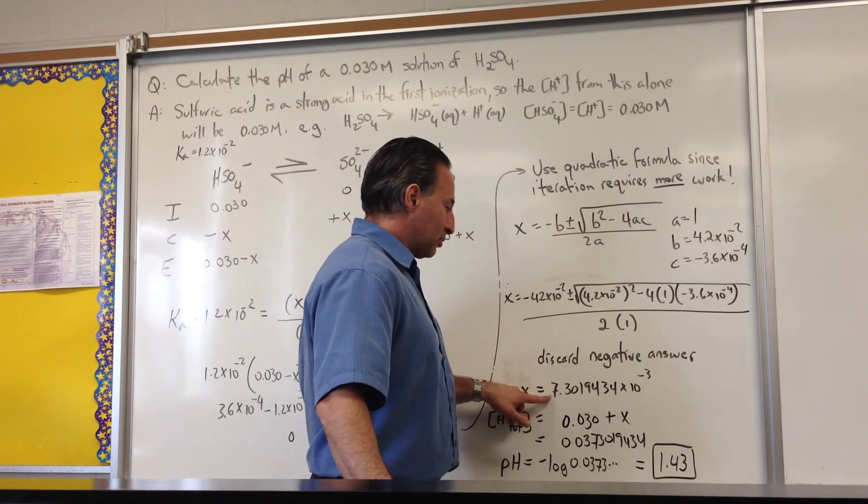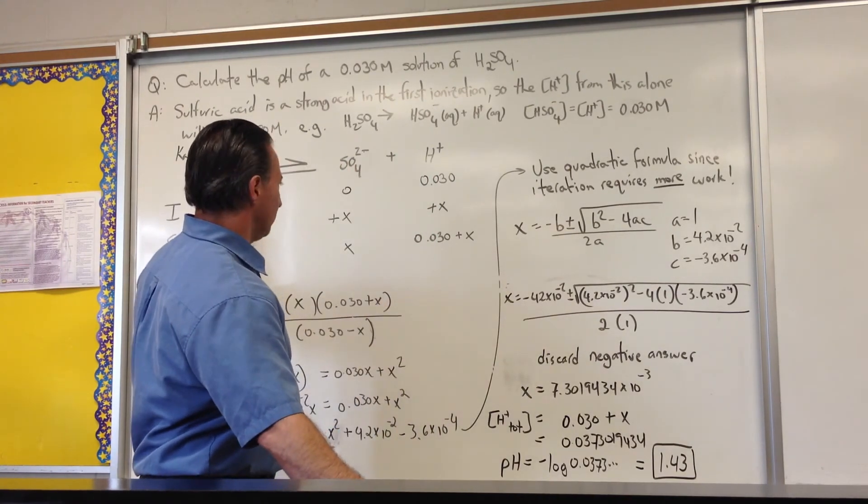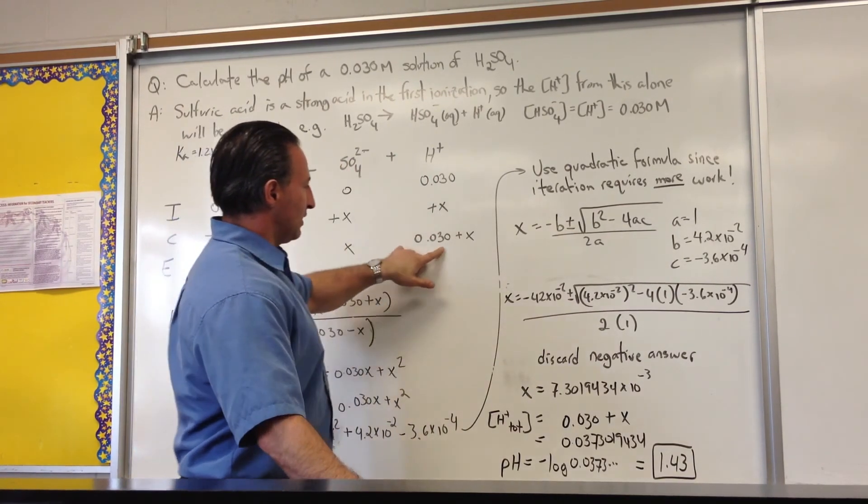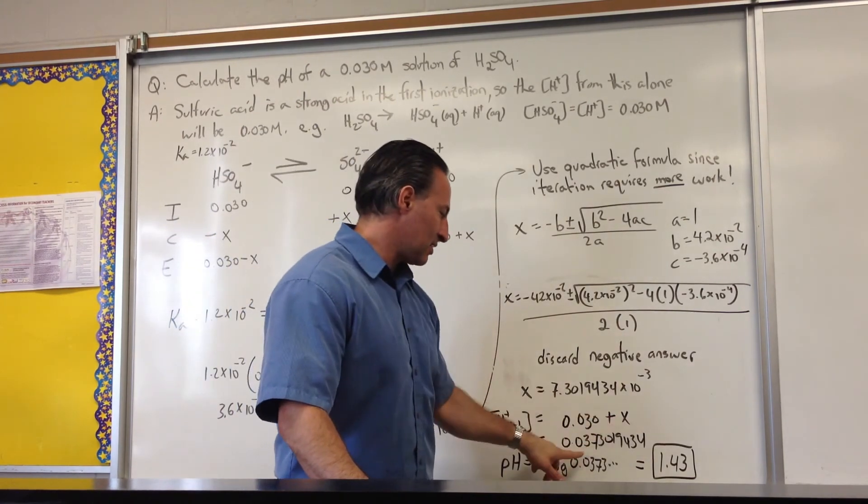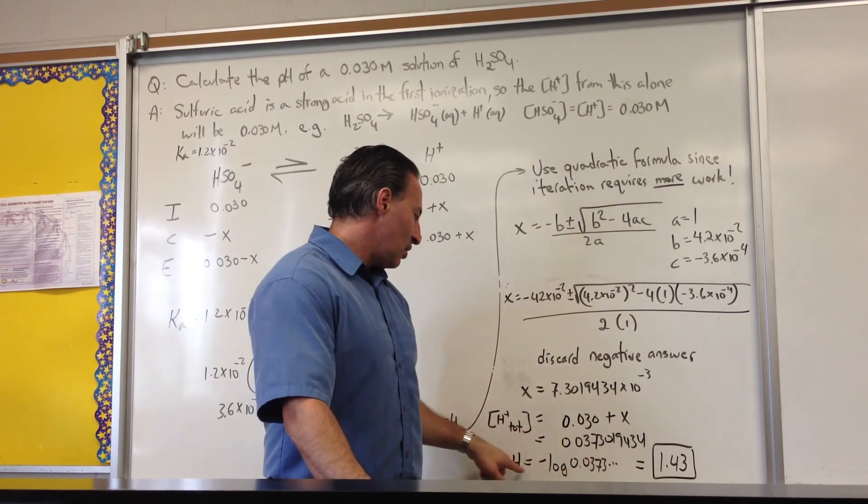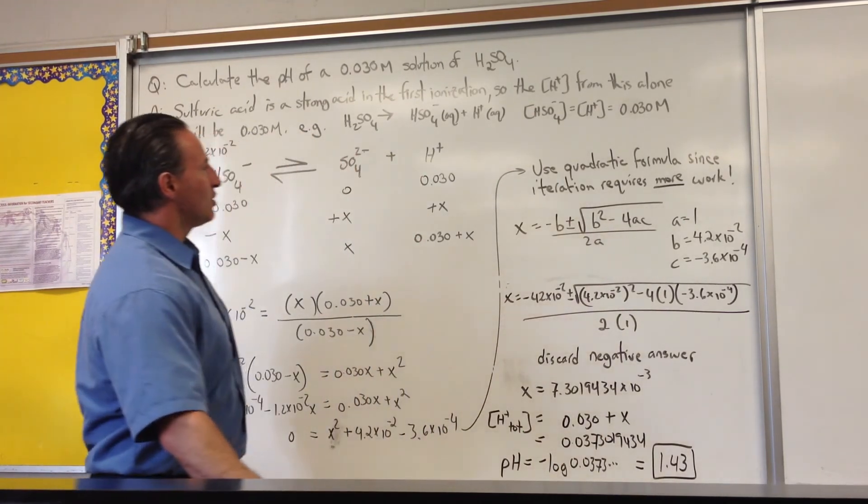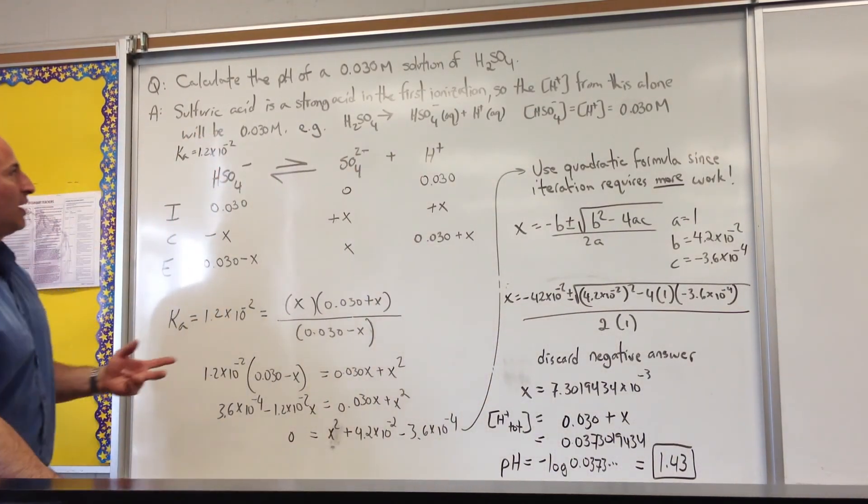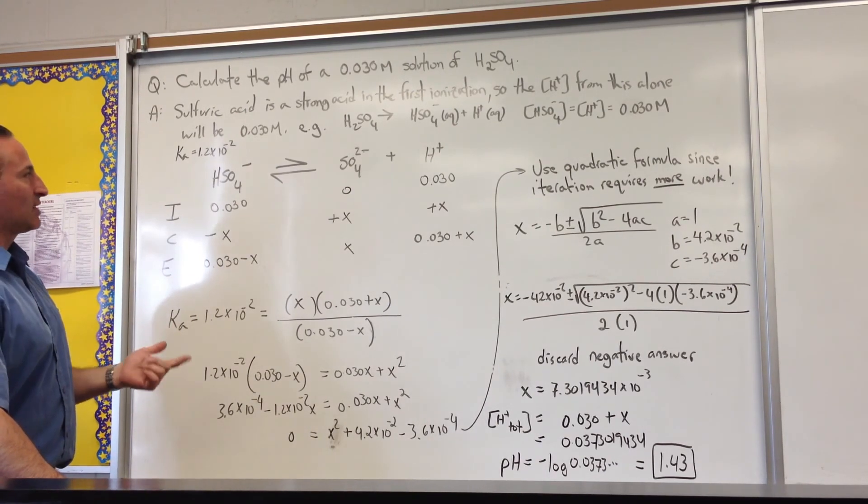That's representing the amount of H⁺ dissociated from the bisulfate. But don't forget to add it to the 0.03 already sitting in solution. So 0.03 plus the X gives you 0.037. When you calculate the pH, you get 1.43. So the pH of sulfuric acid is a combination of the first dissociation and the dissociation of the bisulfate anion.